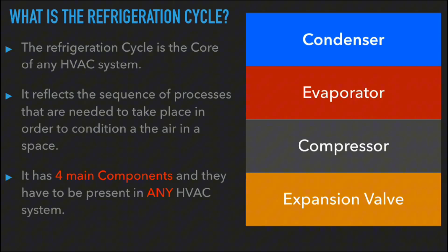The refrigeration cycle, also known as the vapor compression cycle, is the core of the HVAC system. It reflects a sequence of processes needed to condition the air in a space, showing us the sequence of operation and the main components required. The refrigeration cycle has four main components that should be present in any HVAC system: the condenser, the evaporator, the compressor, and the expansion valve.